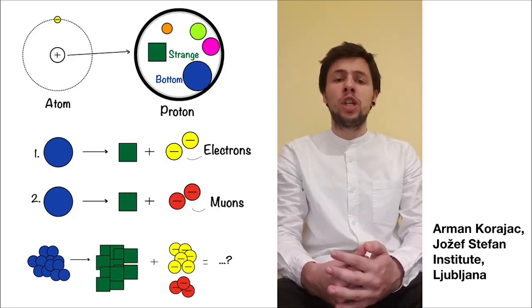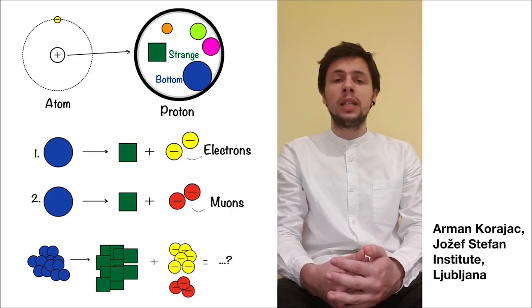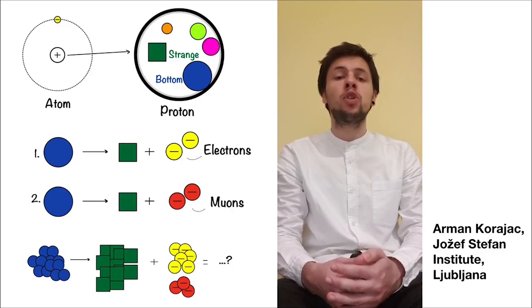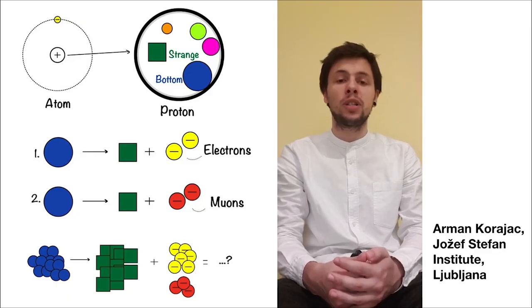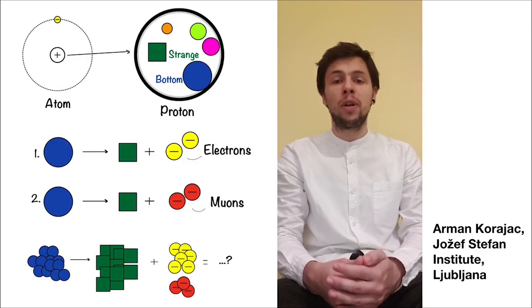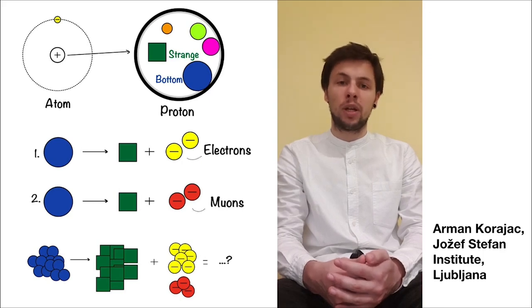Quarks can sometimes change their identity. The bottom quark, for example, can transform into the strange quark. In this process, it leaves behind either a pair of electrons or a pair of muons, which is the heavy brother of the electron.